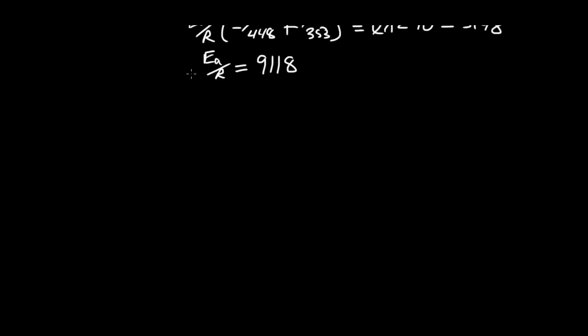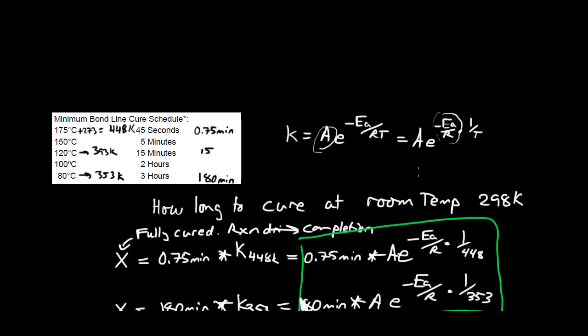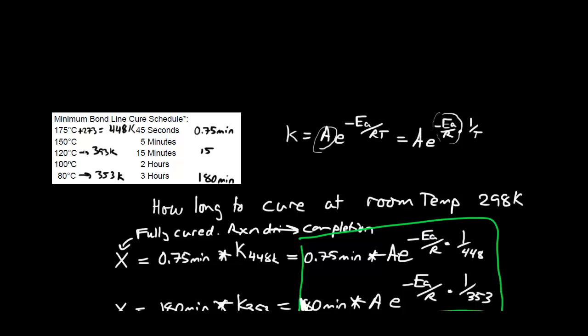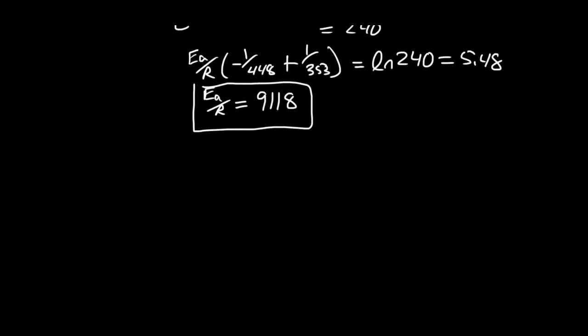Let's double check our work using this. We know that, let me scroll back up. We know that at 393 degrees Kelvin, it should take 15 minutes. Using this function we just solved for E sub A over R, E sub A over R, do we get that?